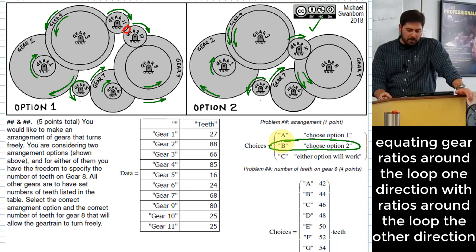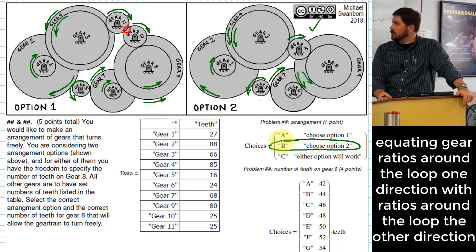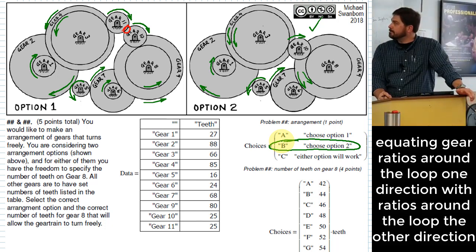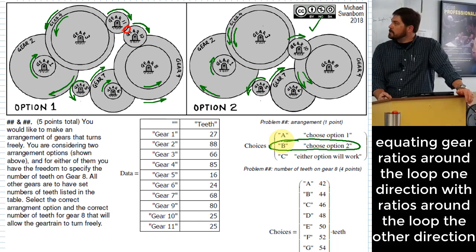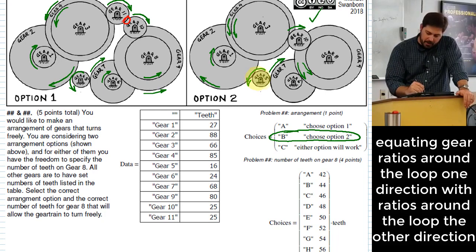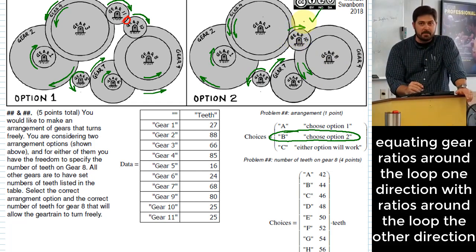But that's only part of the way there. What's the next step? I need to pick a number of teeth for gear number eight. So let me do that this way. I can trace what my gear ratio is between gear five and gear 10 by going around one direction around this loop, and I can do the same thing by going the other direction around the loop, and they better both be the same ratio. Do you agree with that?